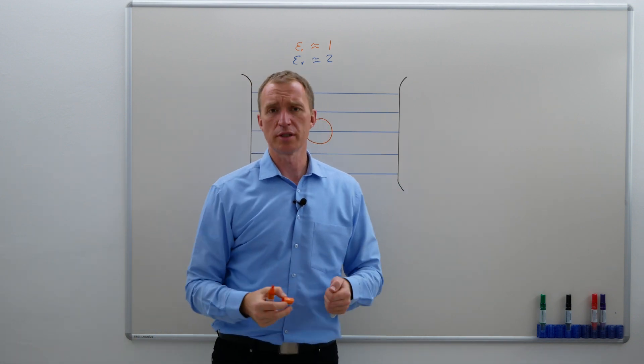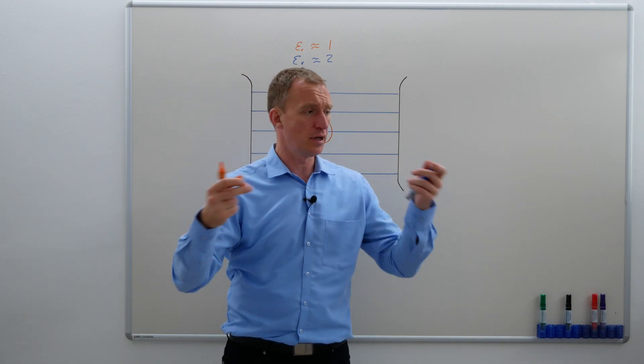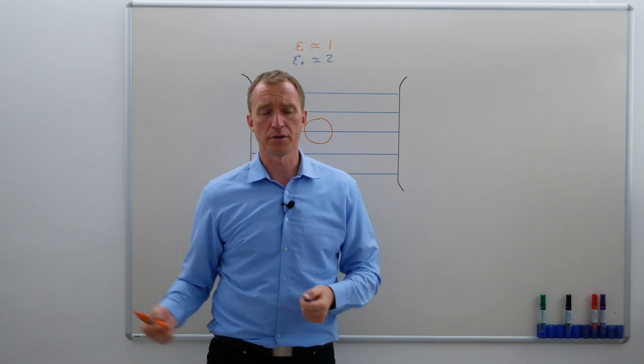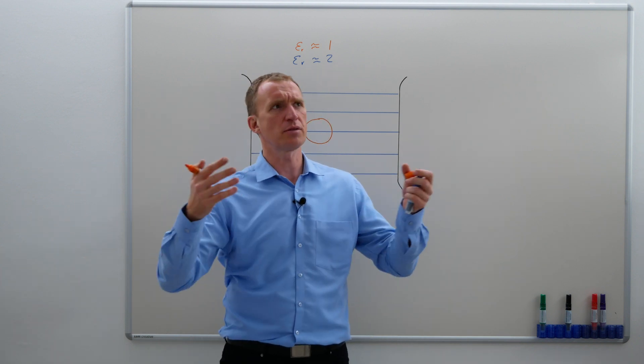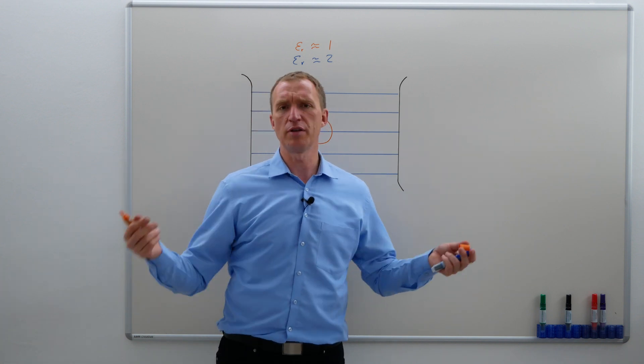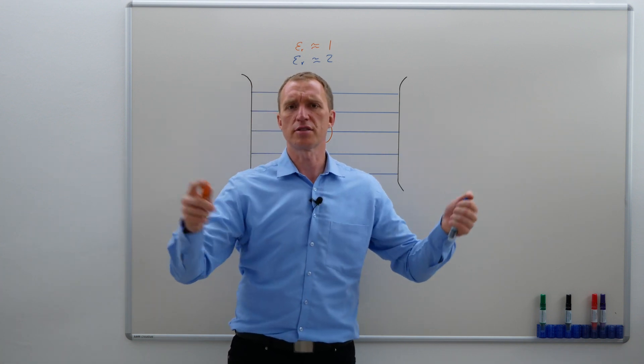Around two. There are numerous insulation materials, especially the solid ones, XLPE and other kinds of plastic that have something around 2.1, 2.3, some of them even 2.5. So let's just say two.